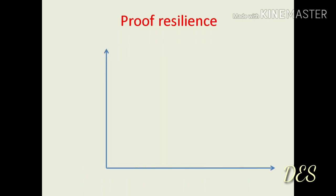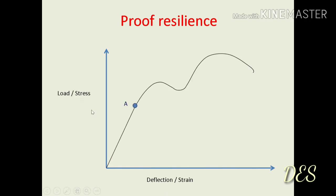If we look at the stress-strain curve graph, this is the elastic limit. When the material is loaded up to point B, which is known as the elastic limit, we are loading up to this point which is the energy store. The OB line represents the strain energy, and this point B is the proof of resilience.